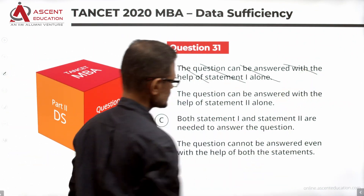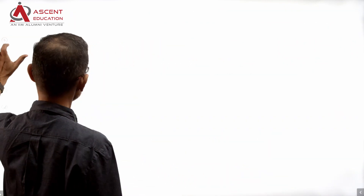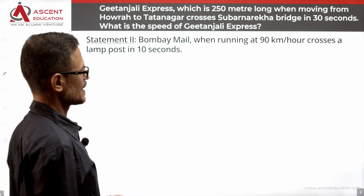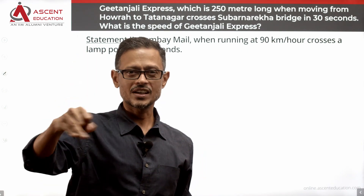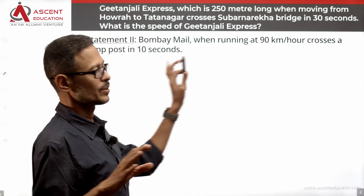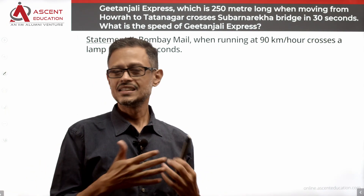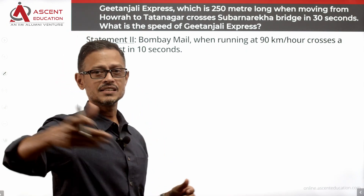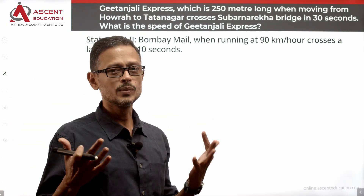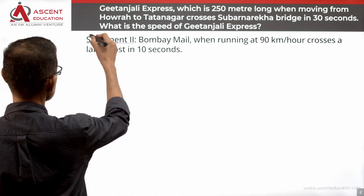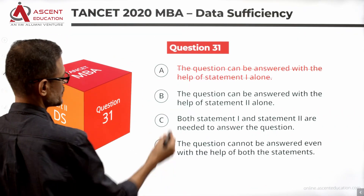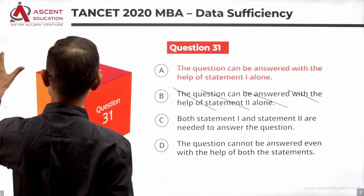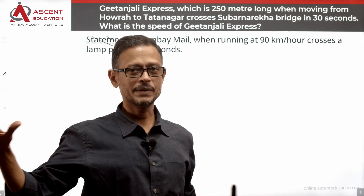We rule out answer option A. Now let's look at Statement 2. Statement 2 says Bombay Mail running at 90 km per hour crosses a lamppost — not a bridge — in 10 seconds. Since it is crossing a lamppost, not the same bridge, Statement 2 alone is definitely not sufficient to give us the speed of Geetanjali Express.